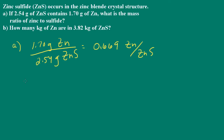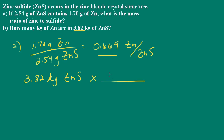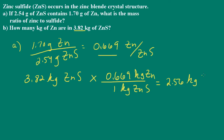In Part B, we're asked how many kilograms of zinc are in 3.82 kilograms of zinc sulfide. It doesn't matter if we're in grams, kilograms, or milligrams — this is the mass ratio. All we need to do is multiply the mass ratio by the mass of the compound. So we have 3.82 kilograms of zinc sulfide, and we multiply by the ratio: 0.669 kilograms of zinc to 1 kilogram of zinc sulfide. That gives us 2.56 kilograms of zinc.